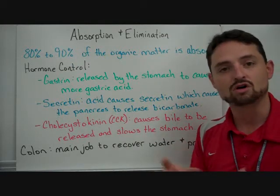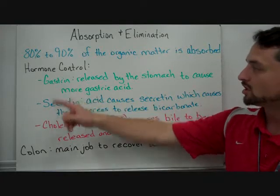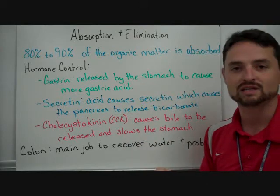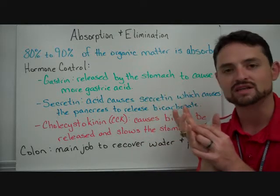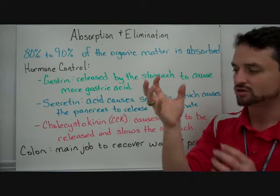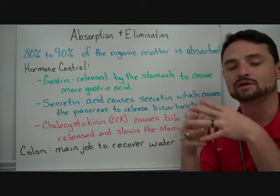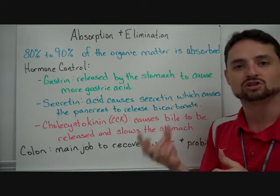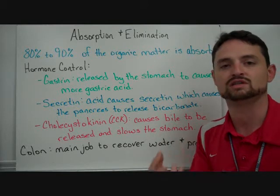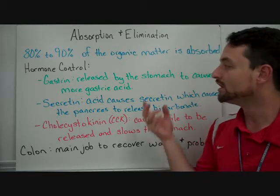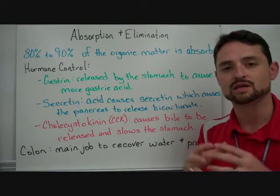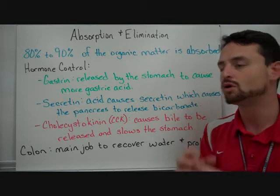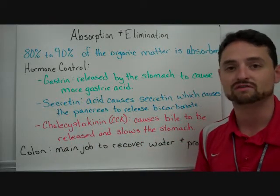There are some hormones that control what's going on. One is called gastrin. Gastrin is released by the stomach to cause more gastric acid to be released. When food hits the stomach, gastrin is released, which increases gastric juices — as long as there's material that needs digesting, gastrin is released. This is positive feedback. However, once a certain pH is reached, a hormone is released that will stop gastrin — that's negative feedback.